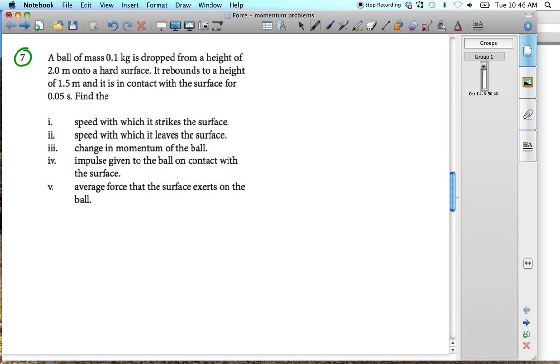We have a ball of mass 0.1 kg dropped from a height of 2 m onto a hard surface. It rebounds to a height of 1.5 m and is in contact with the surface for 0.05 seconds. Find the speed with which it strikes the ball and so forth.